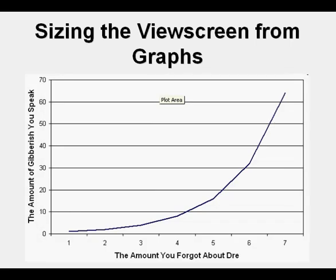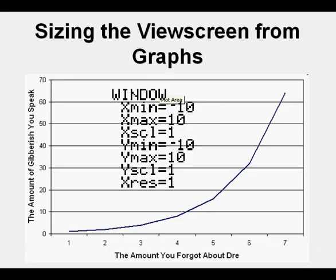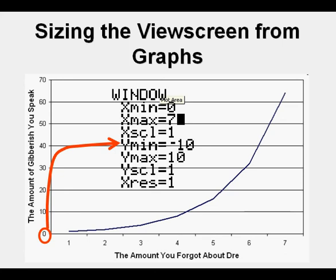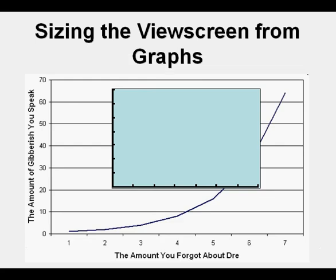Now we're going to look at another graph and go to our window view. We change the x-minimum from negative 10 to 0, then change x-max to 7 to match the original graph. The units are one apart, so we leave x-scale at 1. We change our y-minimum value to 0 to match the graph. The y-maximum is going to be 70, so we change y-max to 70. The y-values are 10 apart, so we change y-scale to 10.